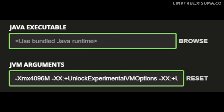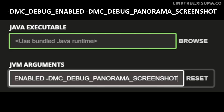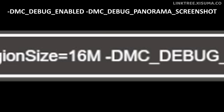We need to add two flags to the very end of our JVM arguments. You're going to paste these in, and you can find what we're pasting in the description box down below. The important thing is to make sure that there is a space before you paste in the arguments — make sure there is a space before the dash of the first flag.